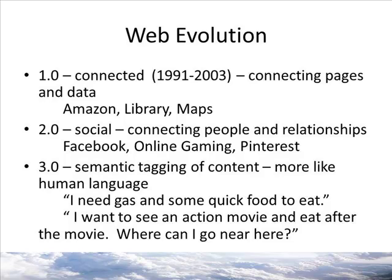Web 3.0 represents the future. What will the web turn into? Many feel that Web 3.0 will be a semantic web or natural language processing web — things will be easier to find using more complex language, and data will be more accessible. So you could ask, "I need gas and some quick food to eat," and get a response telling you your best options. It makes you think of Siri and how helpful or unhelpful she can be. Instead of Siri directing me to a web search, I could ask, "I want to see an action movie and eat after. Where can I go near here?" and get a quick, relevant answer. Web 3.0 means information retrieved from the web will be more targeted and useful.